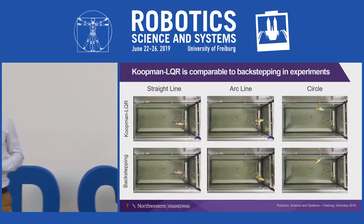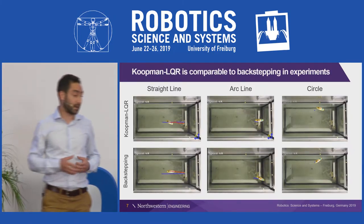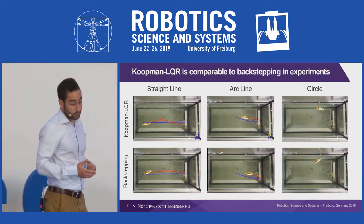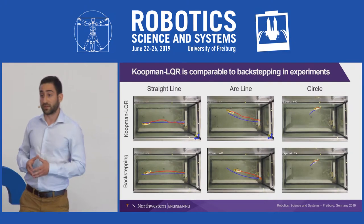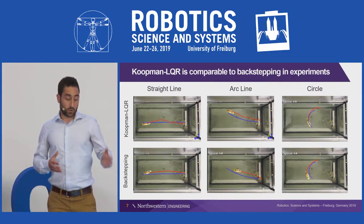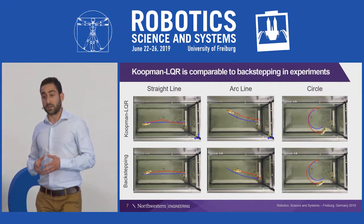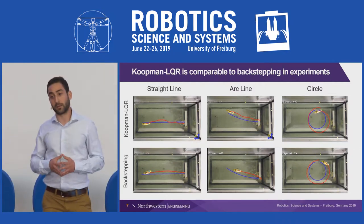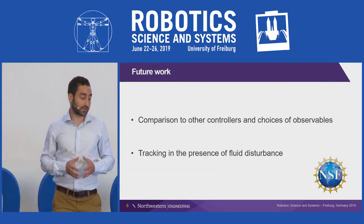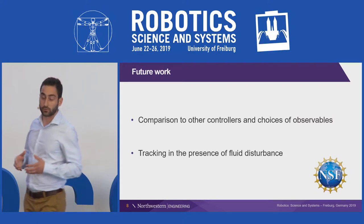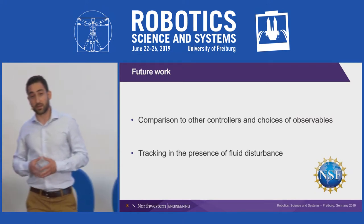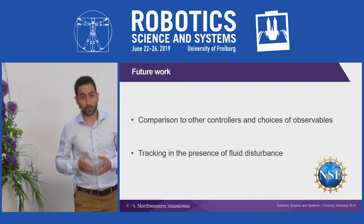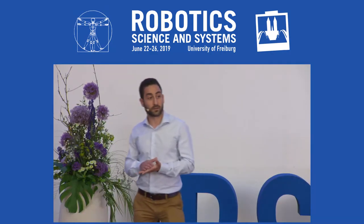Next, we train a Koopman operator using experimental data and compare it against backstepping while tracking a line, an arc, and a circle. Despite using fixed LQR gains throughout the experiment, Koopman LQR compares well to an algorithm that has been manually tuned to do well on the average model dynamics. We are currently extending our work to include comparisons to other controllers and other choices of observables, as well as testing our method in the presence of fluid disturbance. I'll be happy to talk to you during the poster session. Thank you for your attention.